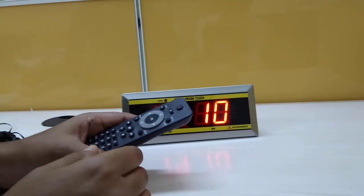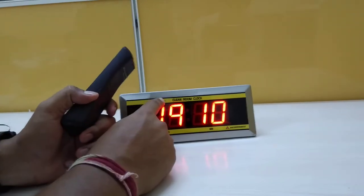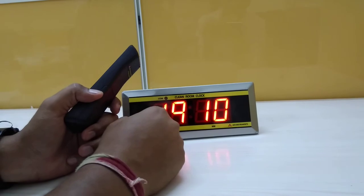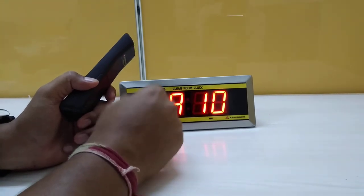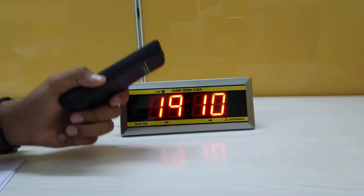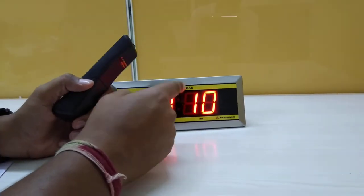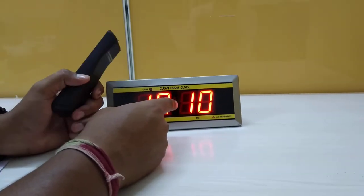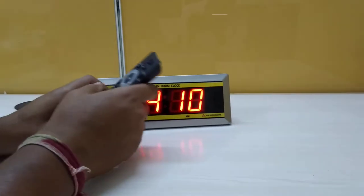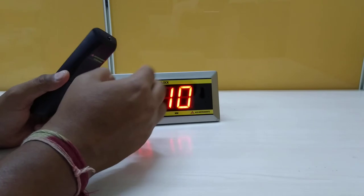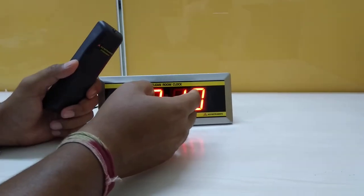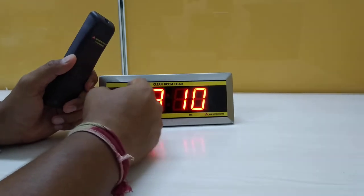This is the basic function of the remote to set the time. This has got a communication option also, RS 45 communication option, and we have several options in this clock. This is a standalone clock. We have an option of GPS clock also, and we have options in 2.5 inches and 4 inches.